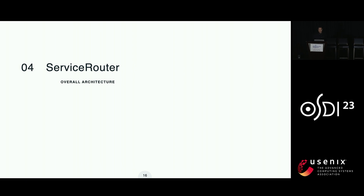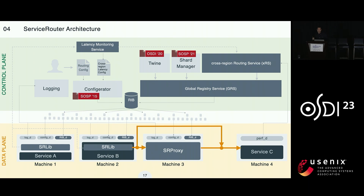For completeness, I'll briefly show how some important components of SR relate to systems you might have seen within Meta. The GRS is an important component that receives service placement updates from Meta's cluster management system Twine, as well as shard mappings from Meta's Shard Manager, and routing tables from XRS. SR also uses both manual and automatic configuration updates, maintained through Configurator. Almost 99% of these configuration updates are driven by automation tools.